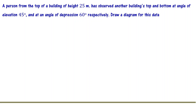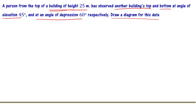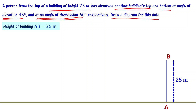A person from the top of a building of height 25 meters has observed another building's top and bottom at an angle of elevation of 45 degrees and an angle of depression of 60 degrees respectively. Draw a diagram for this data. Draw line AB representing the first building of height 25 meters.